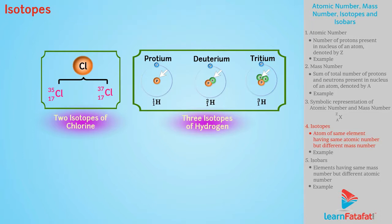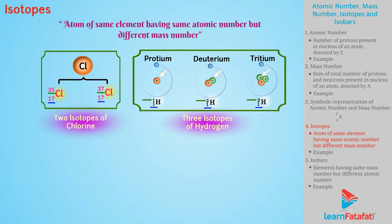Hence, isotopes can be defined as atoms of same element having same atomic number but different mass number. For example, carbon has isotopes C-6-12 and C-6-14.